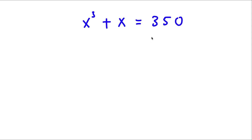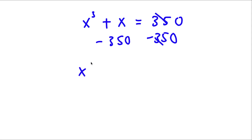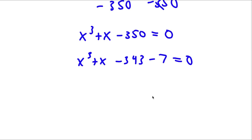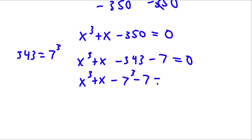Now the first thing I'm going to do is subtract 350 on both sides. So I have x to the power of 3 plus x minus 350 is equal to 0. Now 350 we can rewrite as negative 343 minus 7, and since 343 is the same as 7 to the power of 3, I have x to the power of 3 plus x minus 7 to the power of 3 minus 7 is equal to 0.